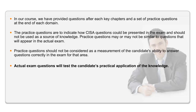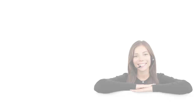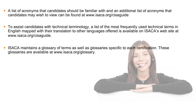Some of the references for CISA are provided here. A complete and comprehensive list of references recommended for study can be found in the CISA Review Manual 2012. This slide also provides acronyms, terminologies, and a glossary of items that will be encountered in the CISA certification course, which can be found in the web links mentioned on the slide.